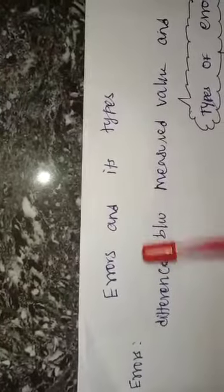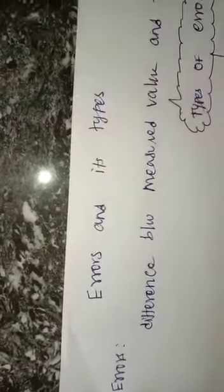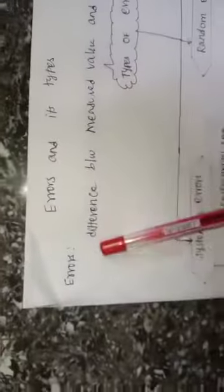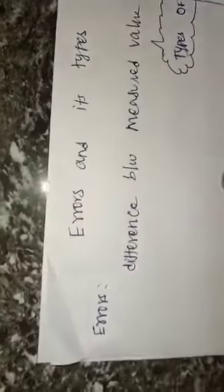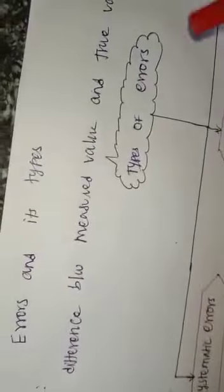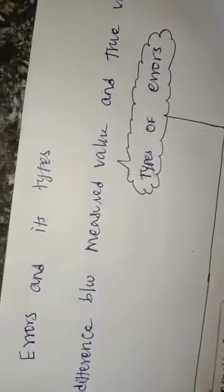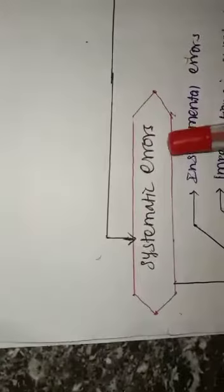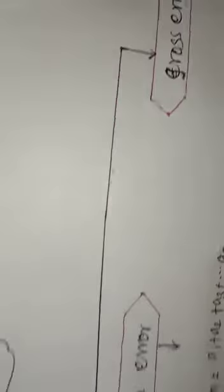Today let us learn about error and its types. First, let's see what is error. Error is nothing but the value of the difference between measured value and true value. Uncertainty values are called error. There are three types of errors: systematic error, random error, and gross error.